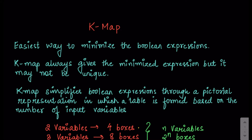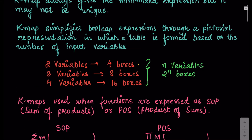K-map stands for Karnaugh map. It is the easiest way to minimize boolean expressions. K-map always gives you the minimized expression but it may not be unique. K-map simplifies the expression with the help of making a pictorial representation in which we form a table. That table has certain boxes and the number of boxes is based on the number of variables that the function has.